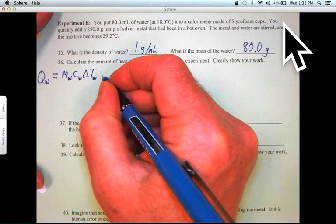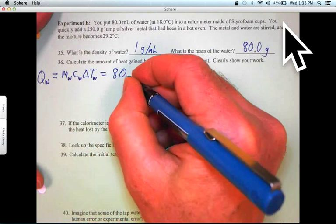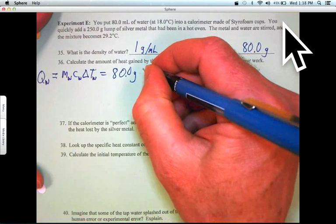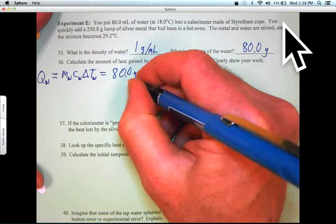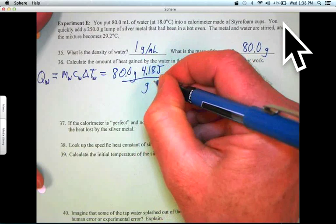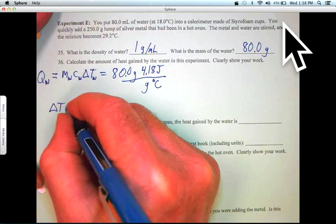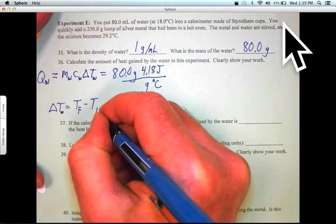So the mass of the water formula equals substitute 80.0 grams of specific heat of water, 4.18 joules per gram degrees C. And the delta T of the water. Well, let's see. Delta T equals, this is of course of the water, T final minus T initial.